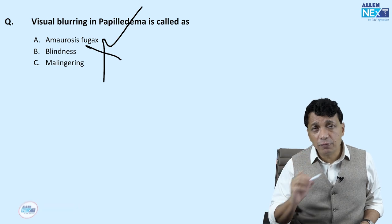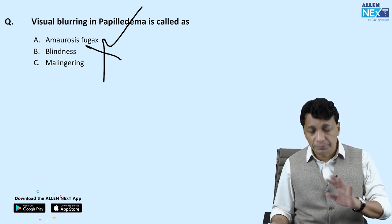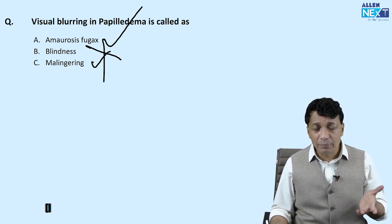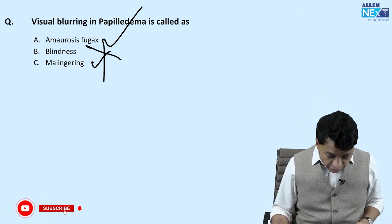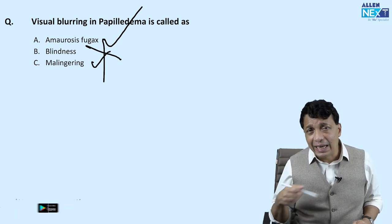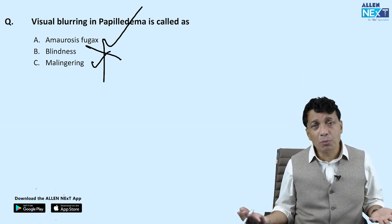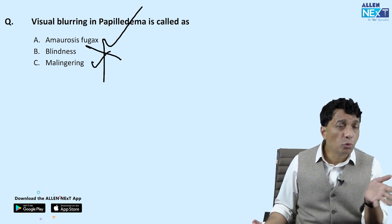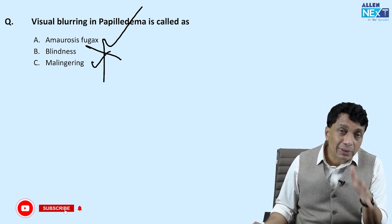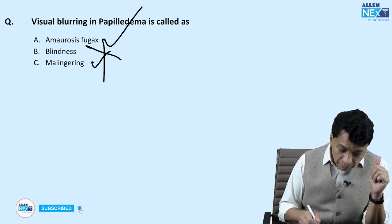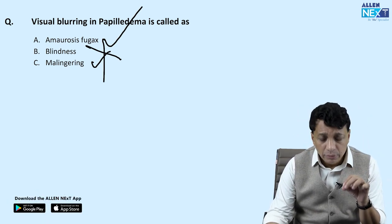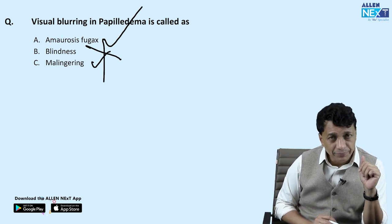In papilledema, vision comes back — it is not permanent blindness unless you're in the fourth (final) stage. Malingering is faking visual loss for some gain — that is not what you see in papilledema. In papilledema, the loss of vision is genuine but only temporary, hence the term amaurosis fugax.